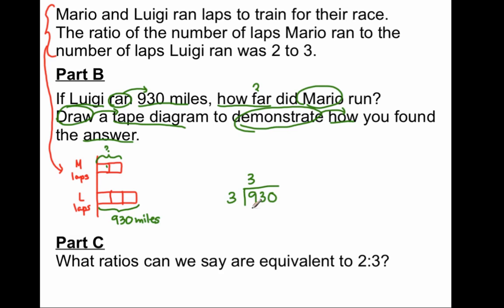3 goes into 9, 3 times. 3 times 300 is 900. And I'm left with 30. And 3 goes into 30, 10 times, 310. And there is nothing left. So, each one of these units is 310. So to answer the question, how far did Mario run, I'm going to take 2 units of 310. 2 units of 310. And it's 620.